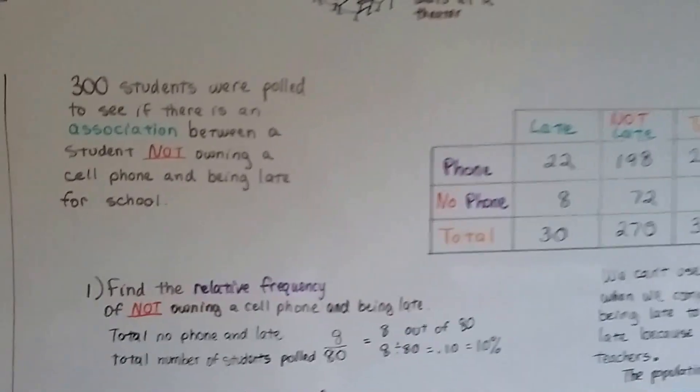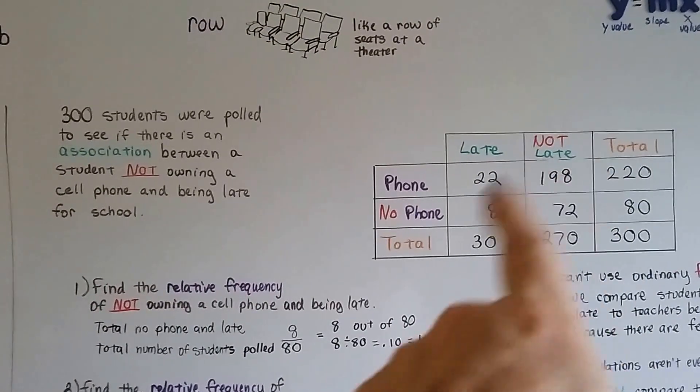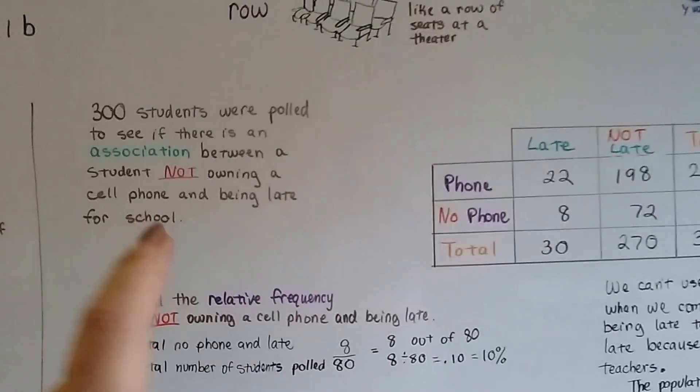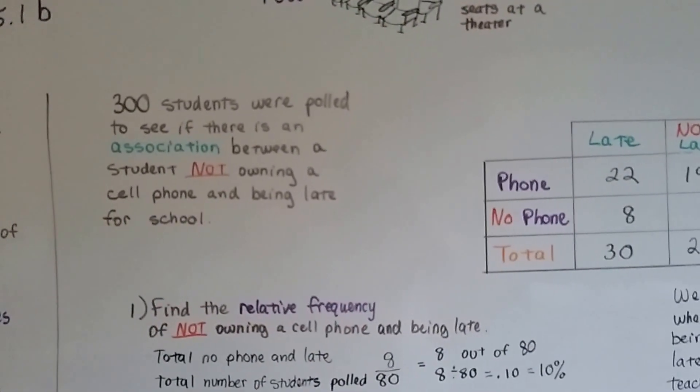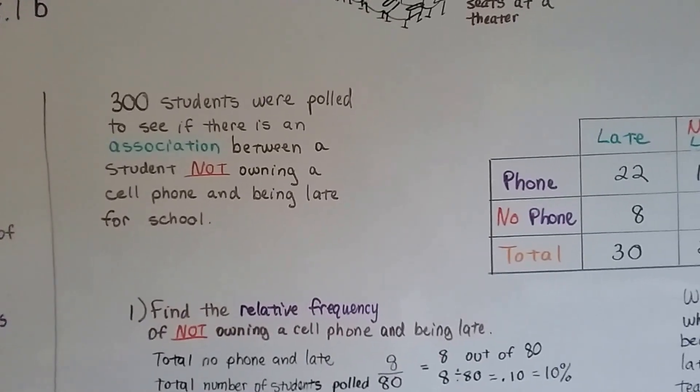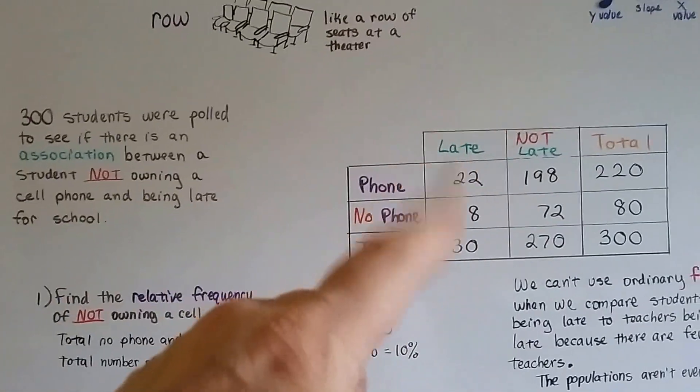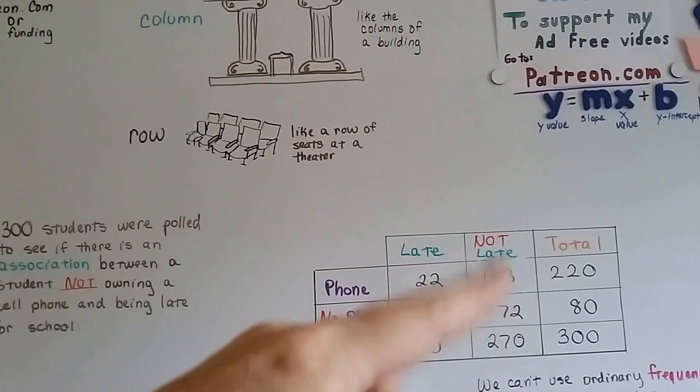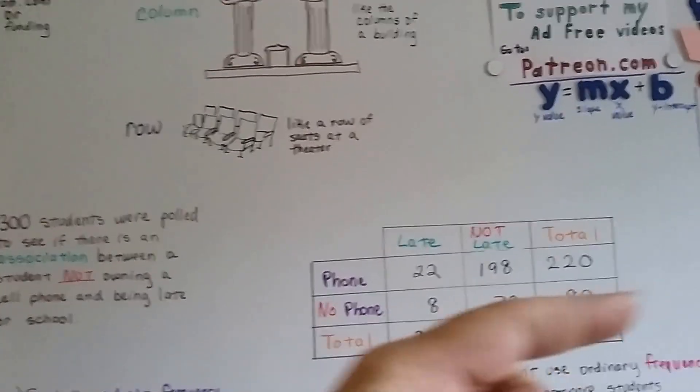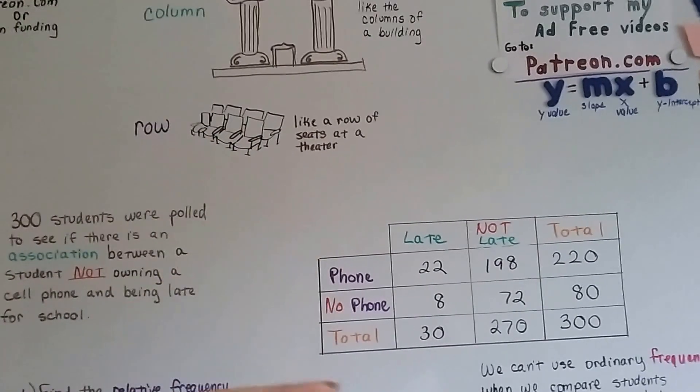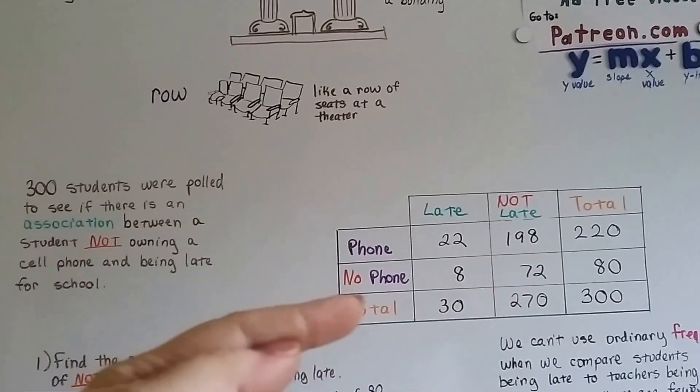Let me back up a little bit. We've got our data in this little chart right here, and 300 students were polled to see if there's an association between a student not owning a cell phone and being late for school. Here's the columns coming up and down. Remember, columns go up and down like the columns of a building, and rows go across, like the rows in a theater. Like the front row, the back row. They go across horizontally.